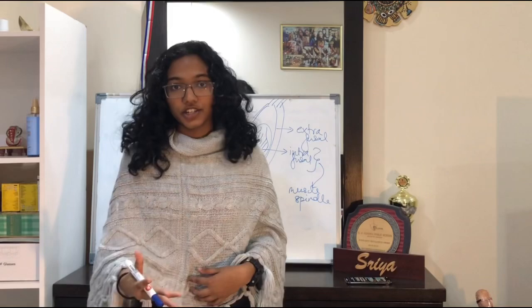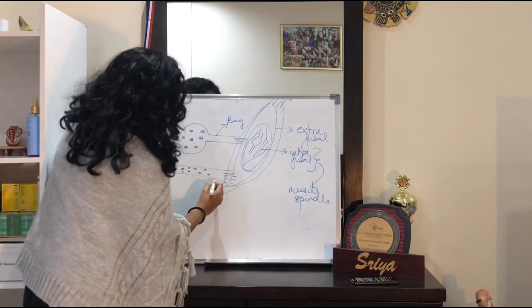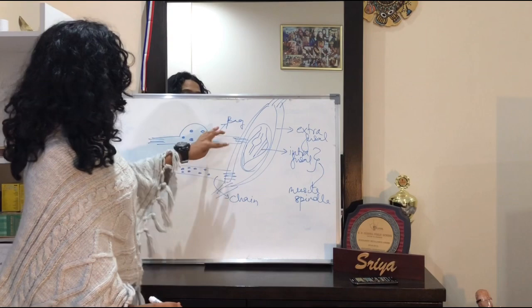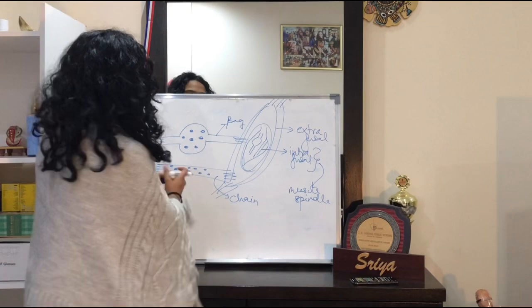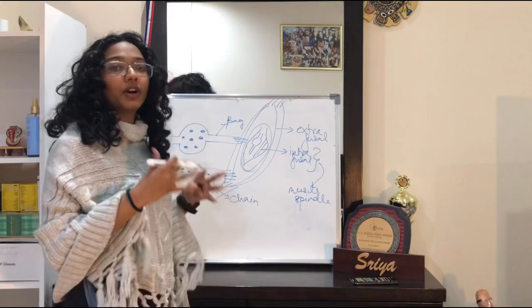Now let's look at the constituents of the muscle spindle. There are two kinds of fibers: nuclear bag fibers, where the nuclei are all clustered and accumulated as a bag in the center, and nuclear chain fibers, where the nuclei are spread out throughout the intrafusal muscle fiber. Now let's talk about the innervation, since these muscle spindles need to send and receive impulses.